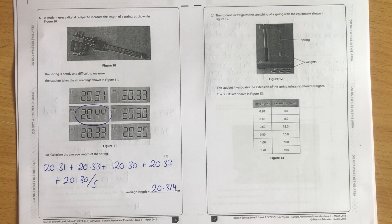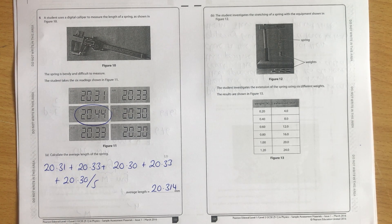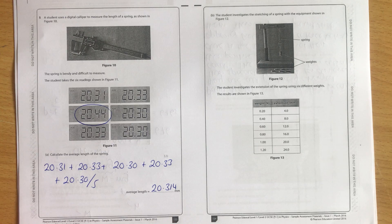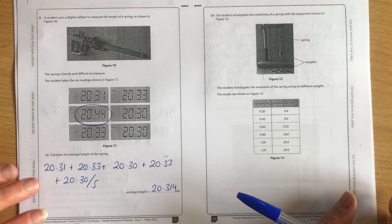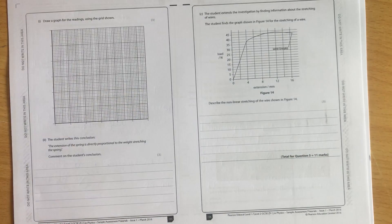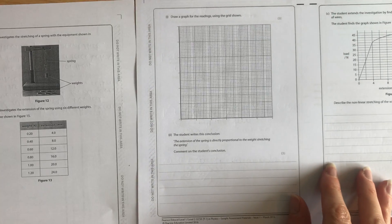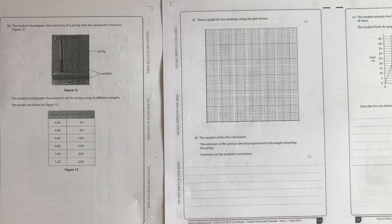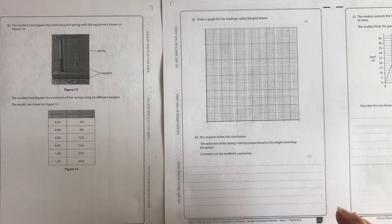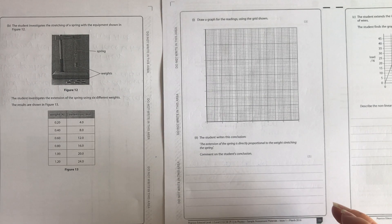Part B, the student investigates the stretching of a spring with the equipment shown in figure 12. The student investigates the extension of the spring using six different weights. The results are shown in figure 13. I'll draw a graph for the readings. I'm using the grid shown. I'm going to do this live. I haven't worked this out before, so I want to show you how you do this.